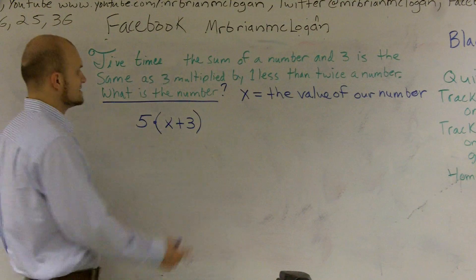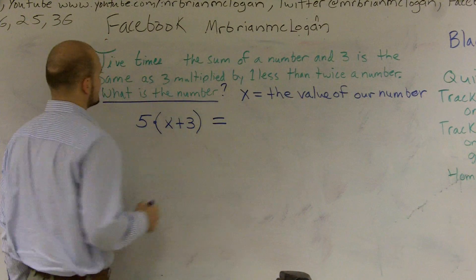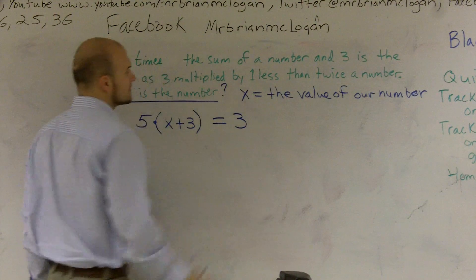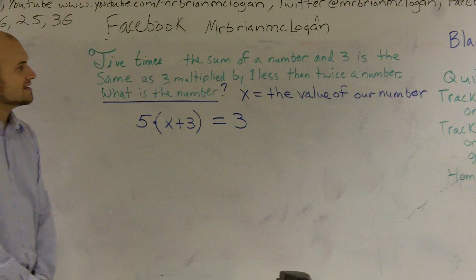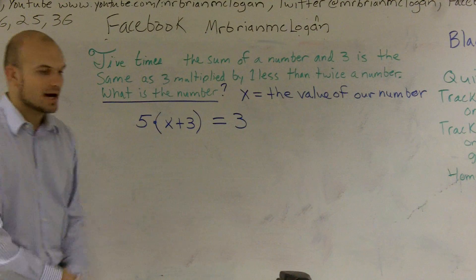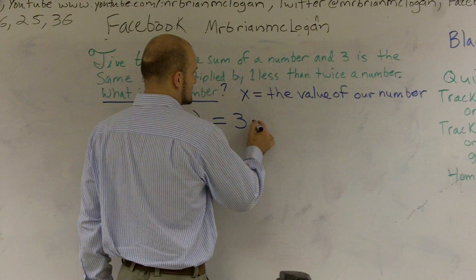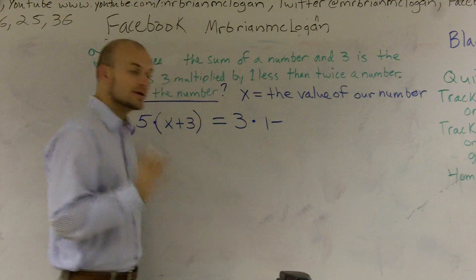Well, they say that is the same as, which is equals, as three multiplied. So I'm going to multiply by three. Then it says one less than twice a number. Now, here's kind of my example. A lot of students say, oh, well, one less, that makes sense. But be very careful.